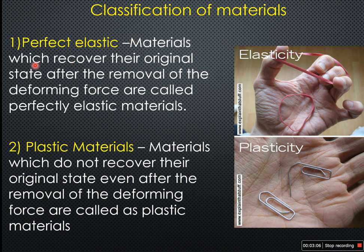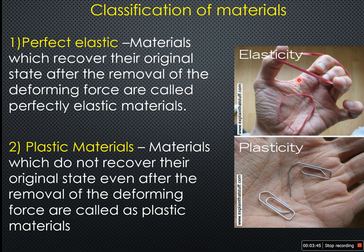What is a perfect elastic material? Materials which recover their original state after the removal of the deforming force are called perfectly elastic materials. For example, the rubber band: when force is applied, the rubber band expands; when the force is removed, the rubber band returns to the same original state. That is the elastic property.